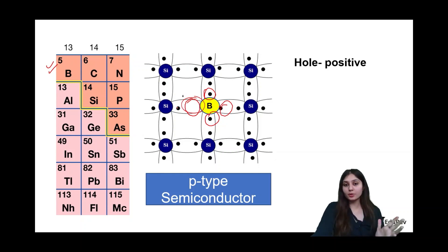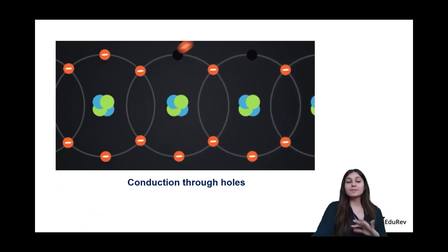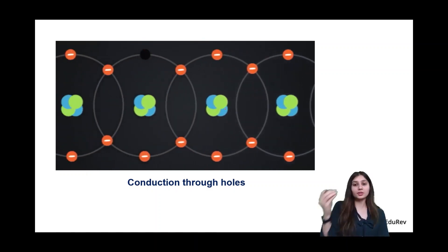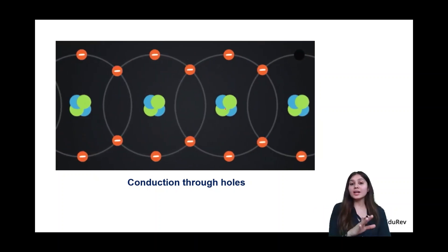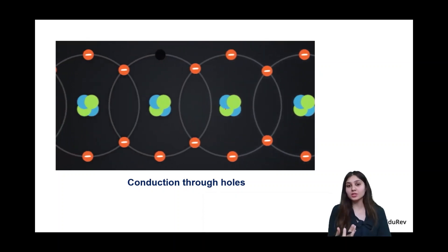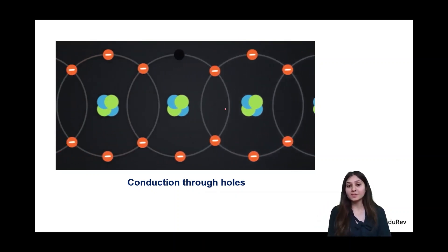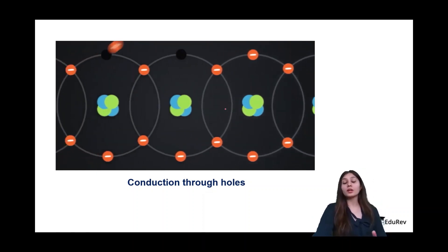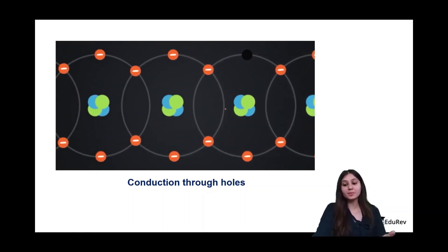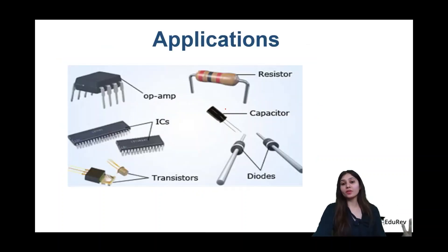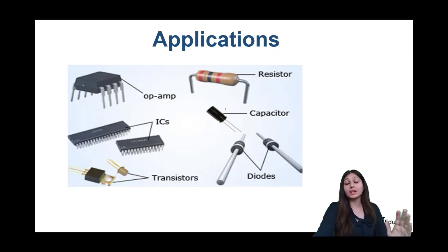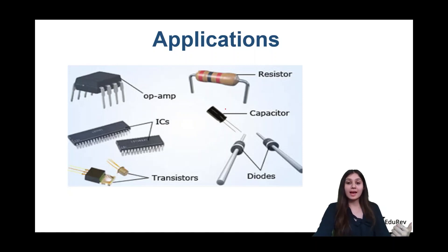How do holes conduct electricity? It's mainly because of electrons — the holes are just vacant spaces where an electron wants to jump. Because electrons jump from one hole to another, that causes movement of electrons, and that's why holes are also able to conduct electricity. So we've completed conductors, insulators, the band theory, and n-type and p-type semiconductors. Applications include resistors, capacitors, diodes, and transistors — it's quite an evolving field. If you have any doubts, comment below and follow this page for more videos. Thank you for watching.